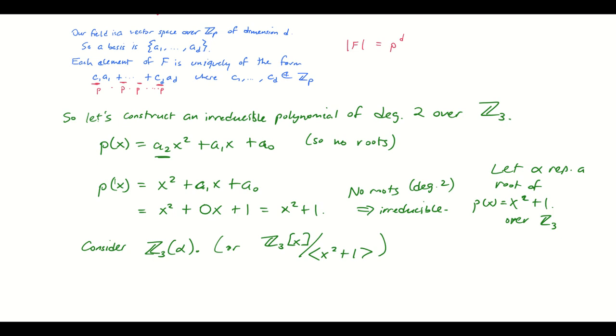So then I have Z mod 3 adjoint alpha, which means this is the field consisting of all a0 plus a1 alpha such that a0 and a1 both belong to Z mod 3.